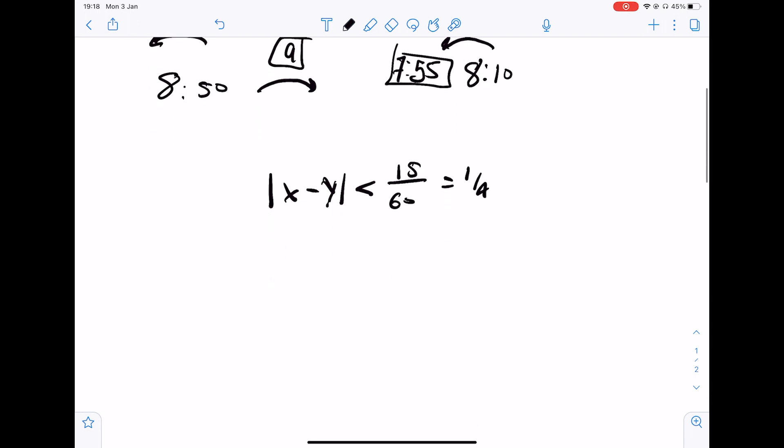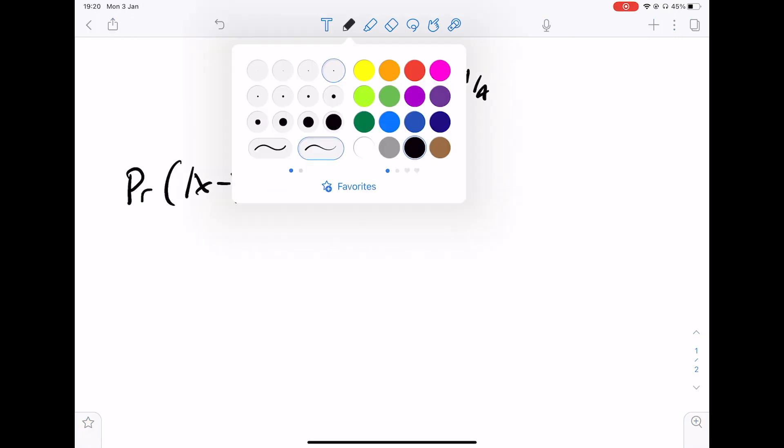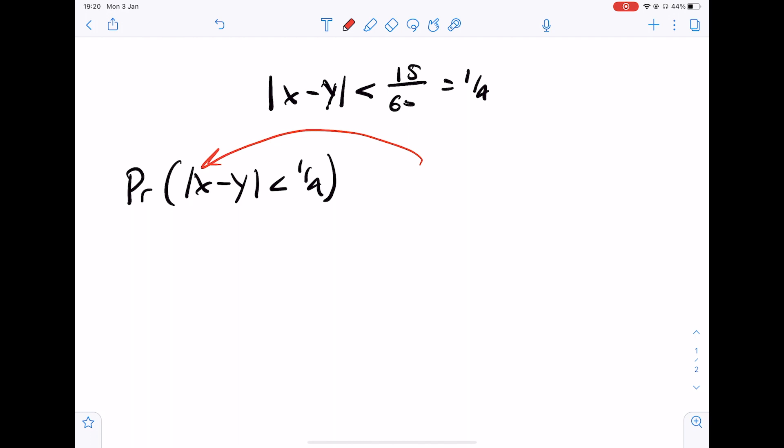Okay so now all we need to do is think about the probability of this being true. Now x and y are going to be assumed to be uniformly distributed between 0 and 1.